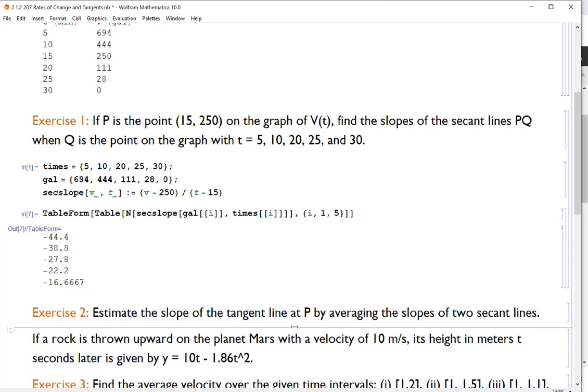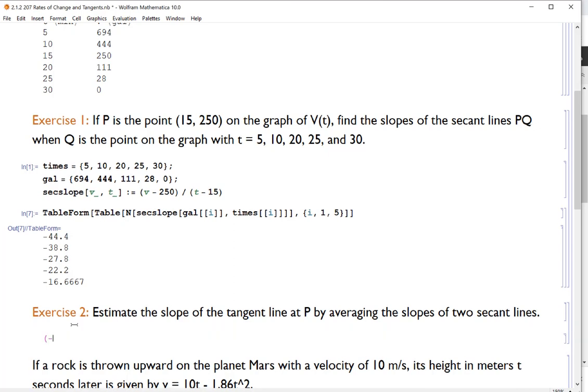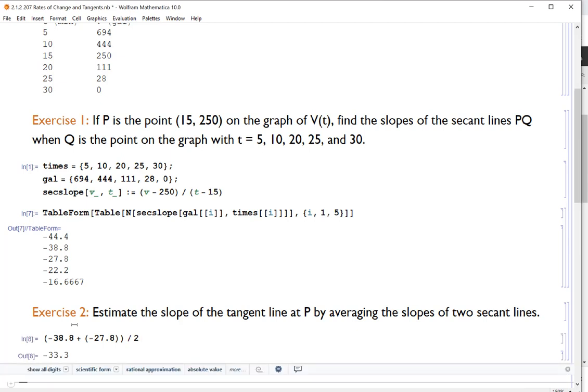So what we're trying to do here is come over with an instantaneous rate of change for what's happening exactly at T equals 15. And we don't have a lot of data points, but this is what we have. So we come up with a pretty good estimate by, we'll see, 15 is between 10 and 20. So why don't we average the 10 and 20 minute secant slopes. So that's going to be negative 38.8. That is the average rate of change at T equals 10 minutes plus negative 27.8. And we divide that by two to average negative 33.3.